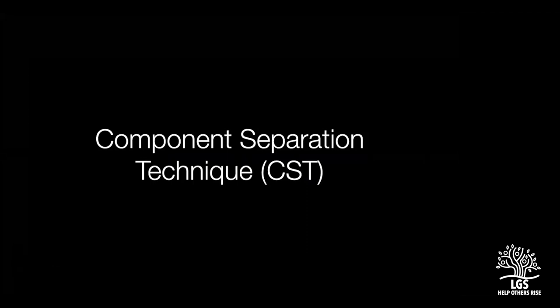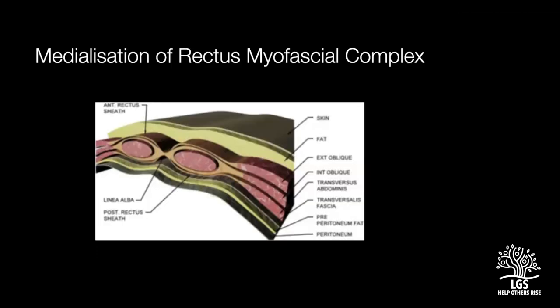Let's move on to reconstruction techniques. The primary objective of achieving a tension-free closure of the midline linea alba or the rectus myofascial complex means that one of the lateral muscles needs to be cut — externally, internally, or the transversus. That is what is meant by component separation: we are separating one component from another and medializing the rectus myofascial complex.